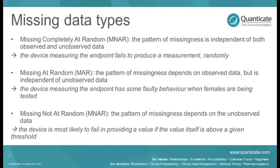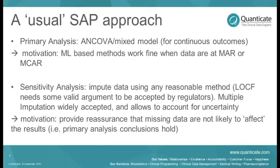Most statistical methods work perfectly well with missing completely at random (MCAR) and missing at random (MAR), but no method is really fit for purpose when data are missing not at random. So what usually happens is that within your study protocol, statistical analysis plan, or whichever documentation you write, you specify a primary analysis which is usually a maximum likelihood-based method - it can be an unstructured model, a mixed model, or whatever is fit for purpose - and these methods work fine when we have MAR or MCAR data.